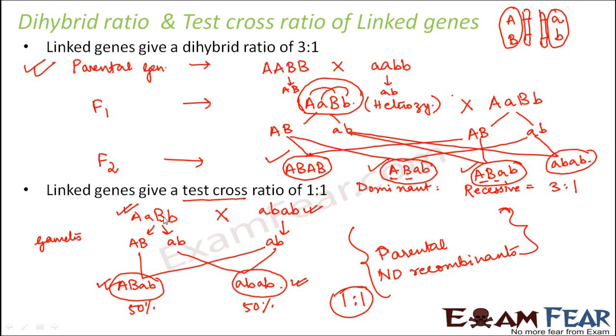And in this case the phenotype as well as the genotype, both phenotype ratio, genotype ratio is 1 is to 1. And you see only the parental combinations being formed in the offspring and there is no recombinance being formed.